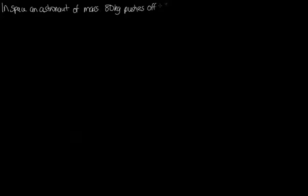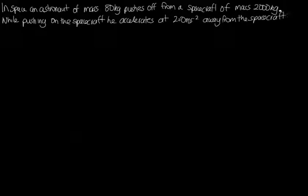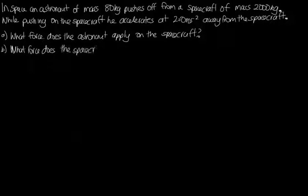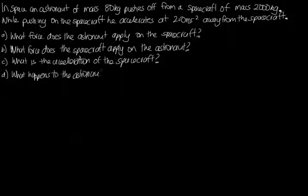The question is: in space, an astronaut of mass 80 kilograms pushes off from a spacecraft of mass 2000 kilograms. While pushing on the spacecraft he accelerates at 2.0 meters per second per second away from the spacecraft. Part A: what force does the astronaut apply on the spacecraft? Part B: what force does the spacecraft apply on the astronaut? Part C: what is the acceleration of the spacecraft? And Part D: what happens to the astronaut when he stops pushing?